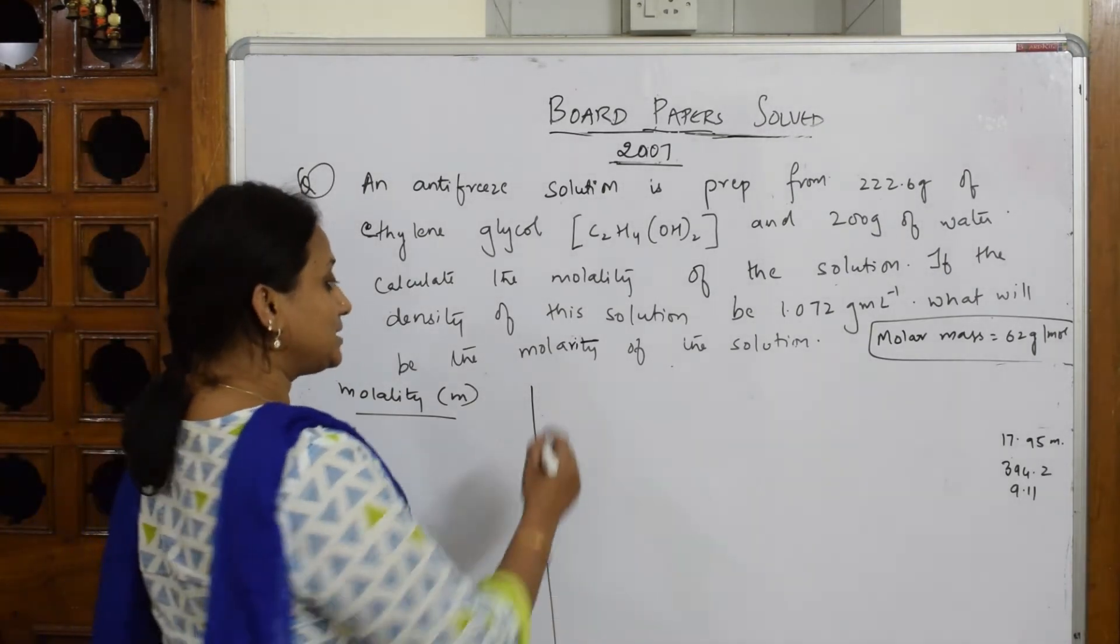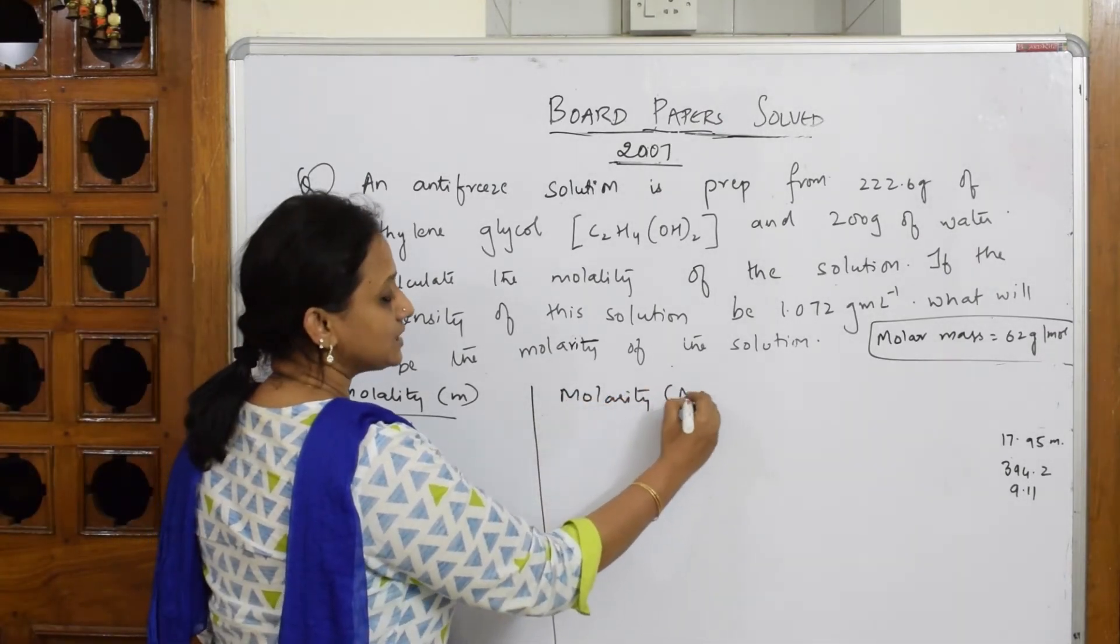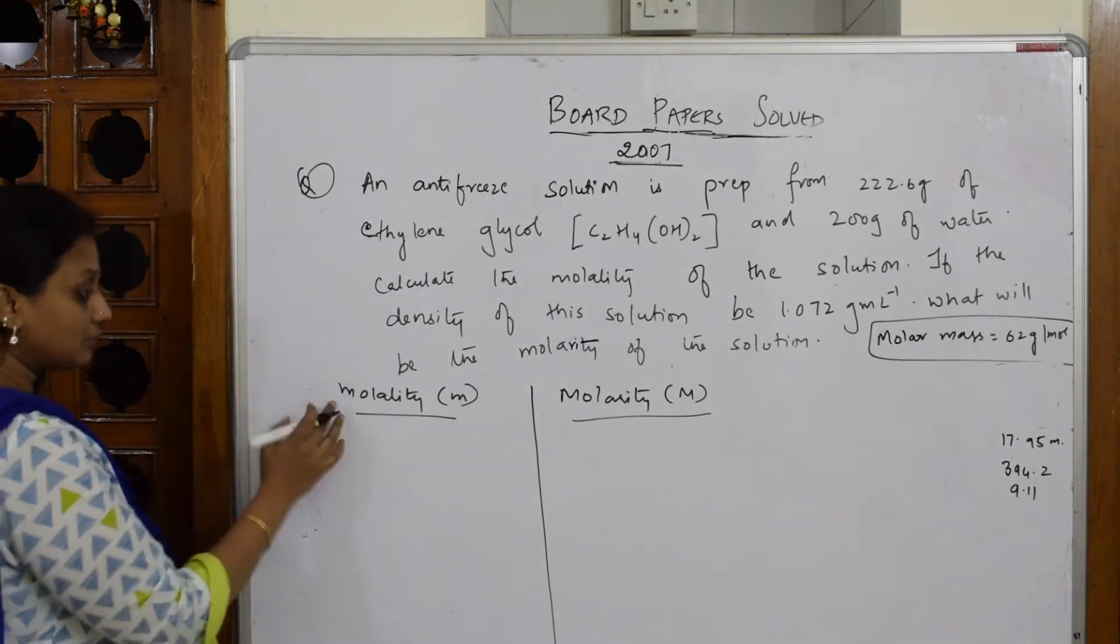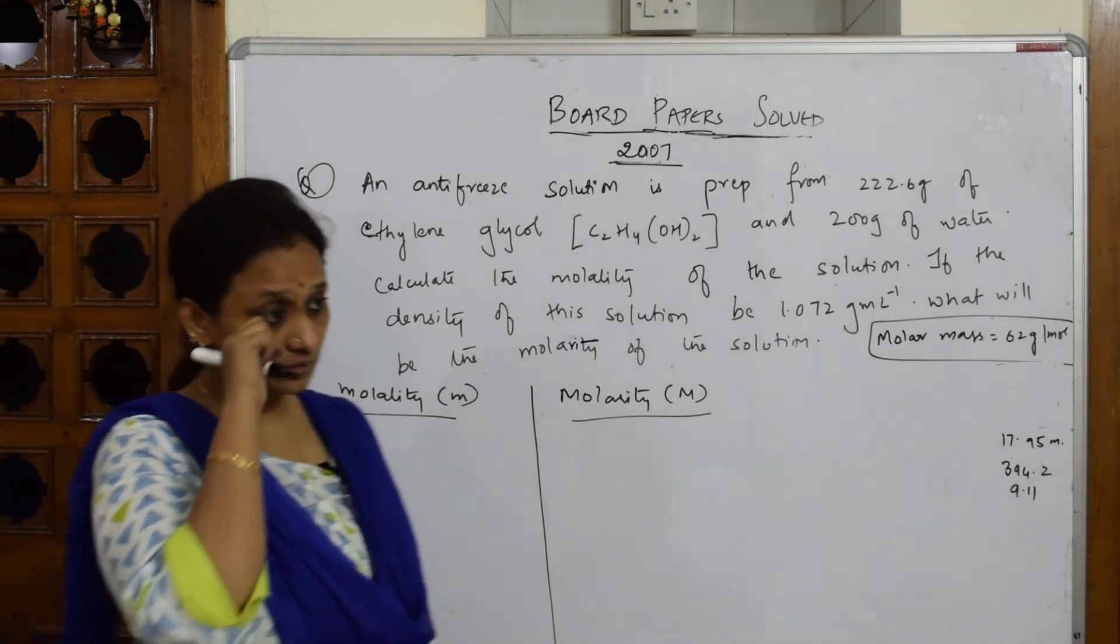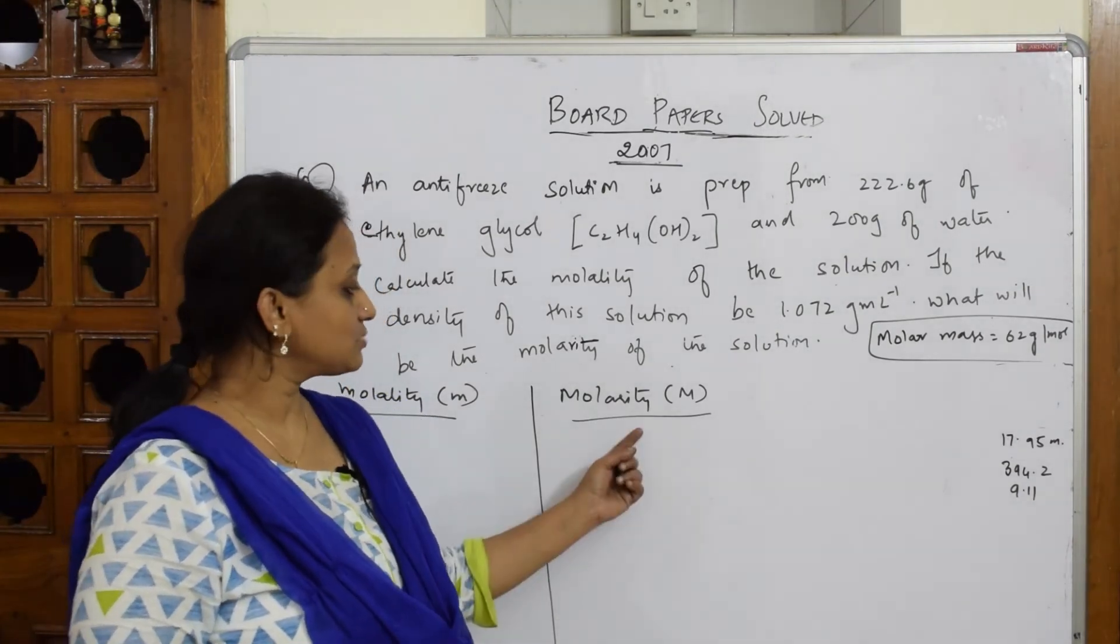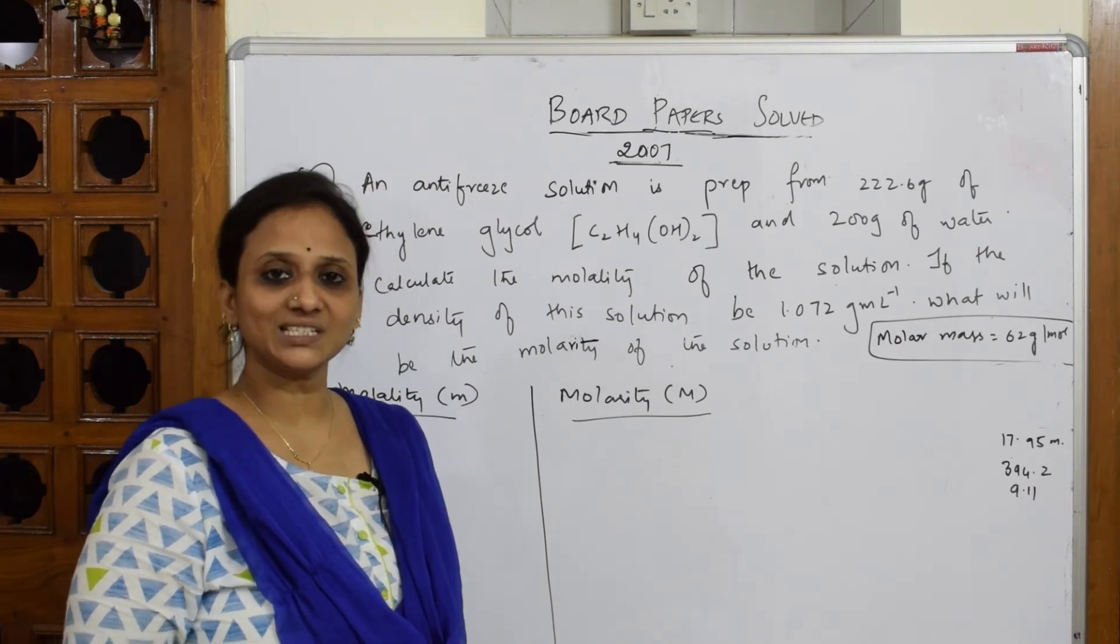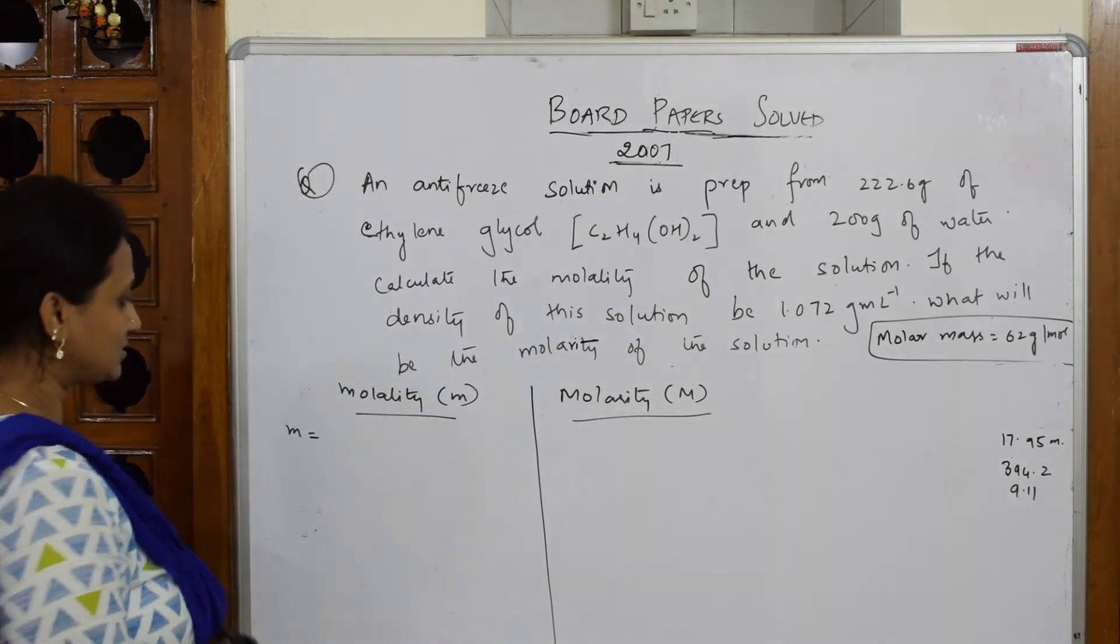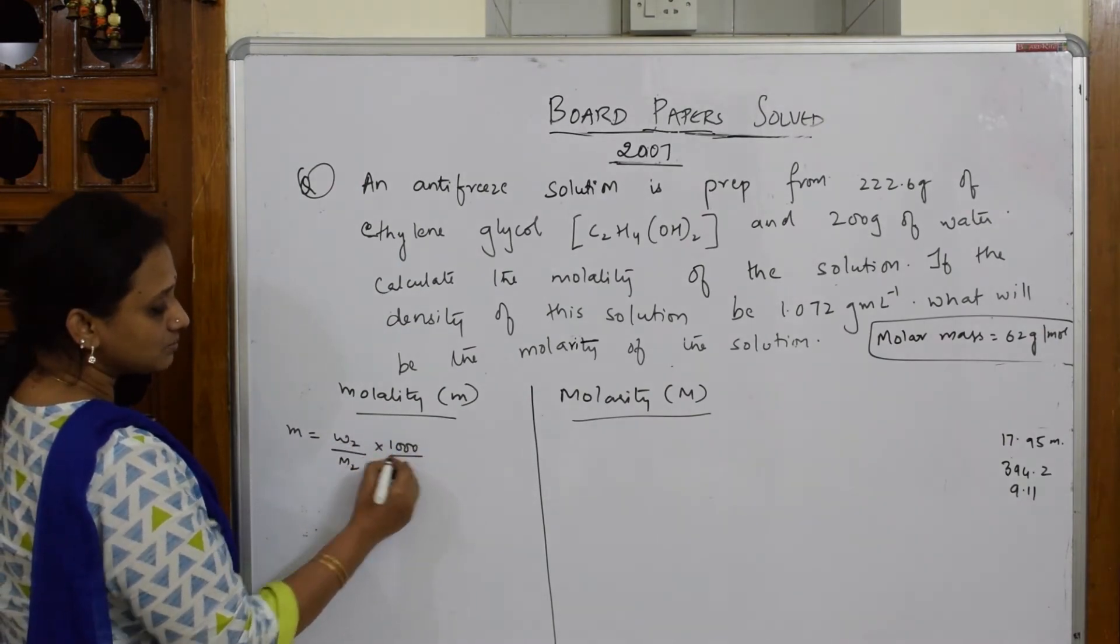Let's start the numerical. First thing for molality, the formula is: molality is number of moles of the solute divided by weight of the solvent in kg. Molarity is number of moles of the solute by volume of the solution in liters. So molality is w2 by m2 into 1000 by w1. Molarity is capital M equals w2 by m2 into 1000 by v.